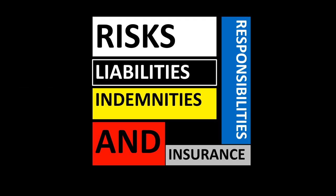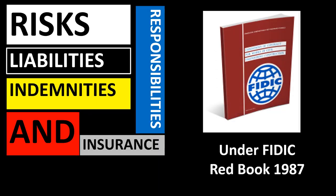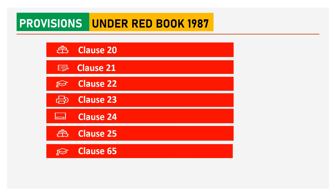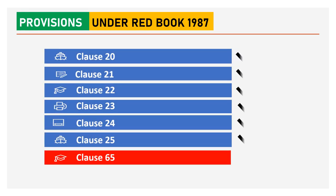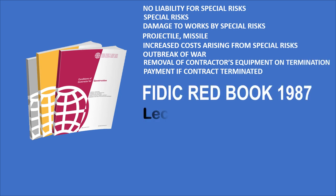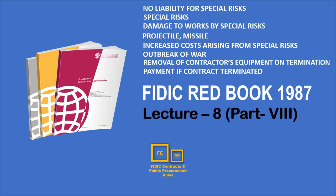Risk Liabilities, Indemnities, Responsibilities and Insurances under Redbook FIDIC 1987 version. As discussed earlier, following our main clauses which deal with Risk Liabilities, Indemnities, Responsibilities and Insurances — we have already discussed the first six clauses and today we will discuss Clause 65. This will be Part 8 of our Lecture Number 8.